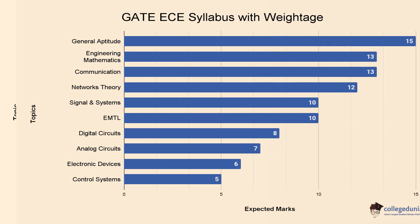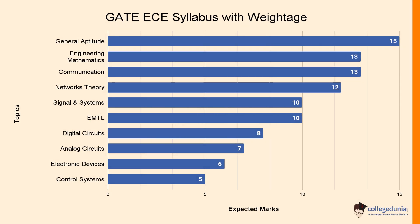Let's check the GATE ECE syllabus with weightage. For Communications, you can expect questions of 13 marks. For Network Theory, you can expect questions of 12 marks. For Signals and Systems, you can expect questions of 10 marks.